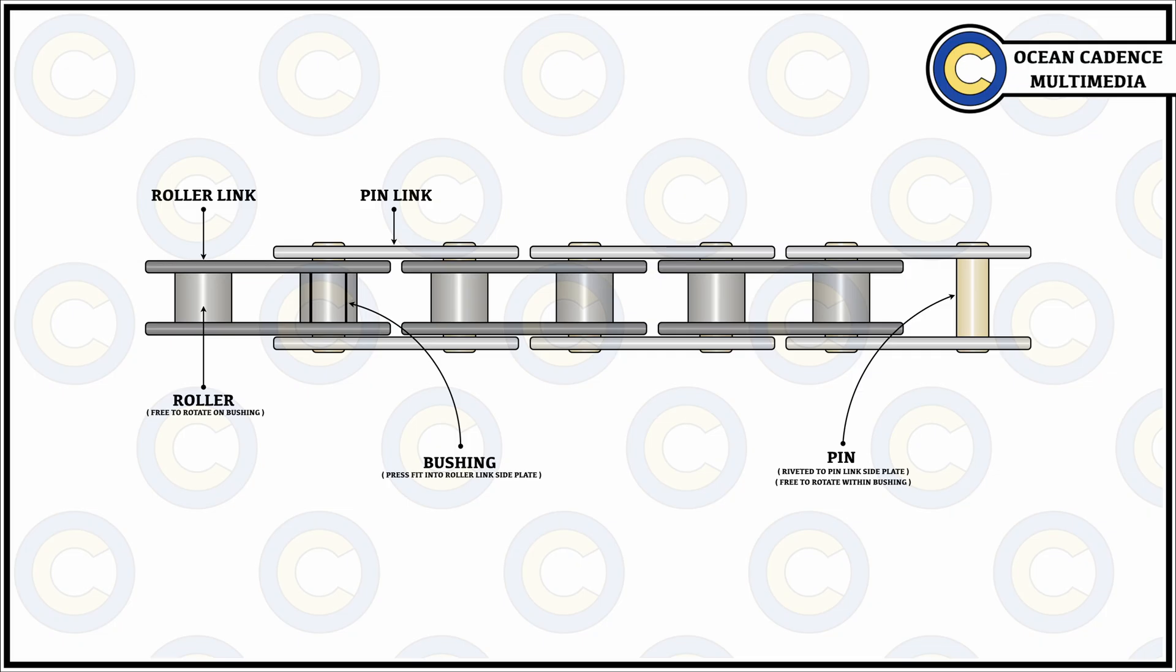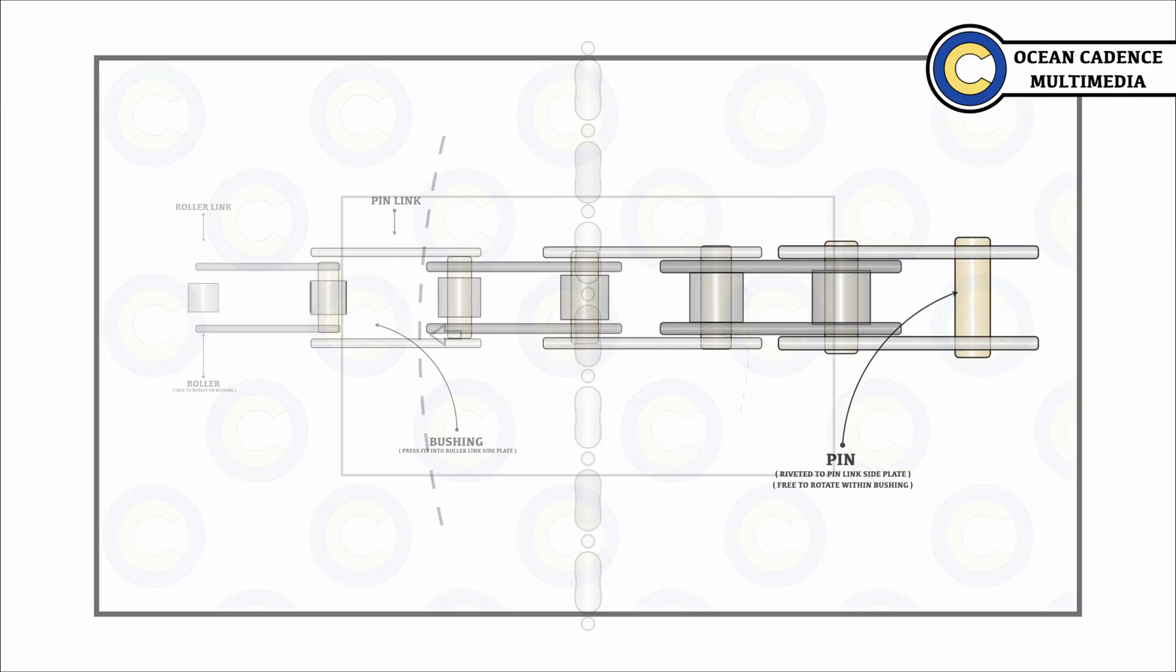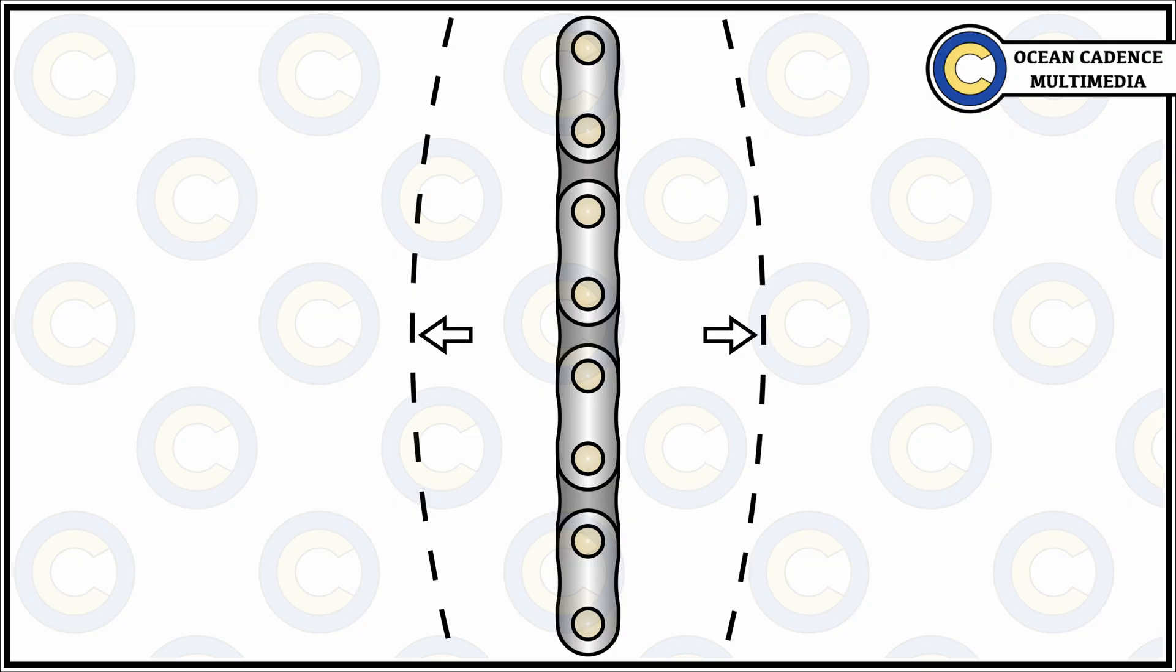Once we have carried out all the regular checks, then what we also need to identify is whether the chain is actually slack in nature or not. To identify that, we turn the engine in a way that the free length of the chain, that is the extendable length which is free to move or free for creating any pressure and movement on the horizontal axis, is accessible to the user on the side of the adjusting sprocket.